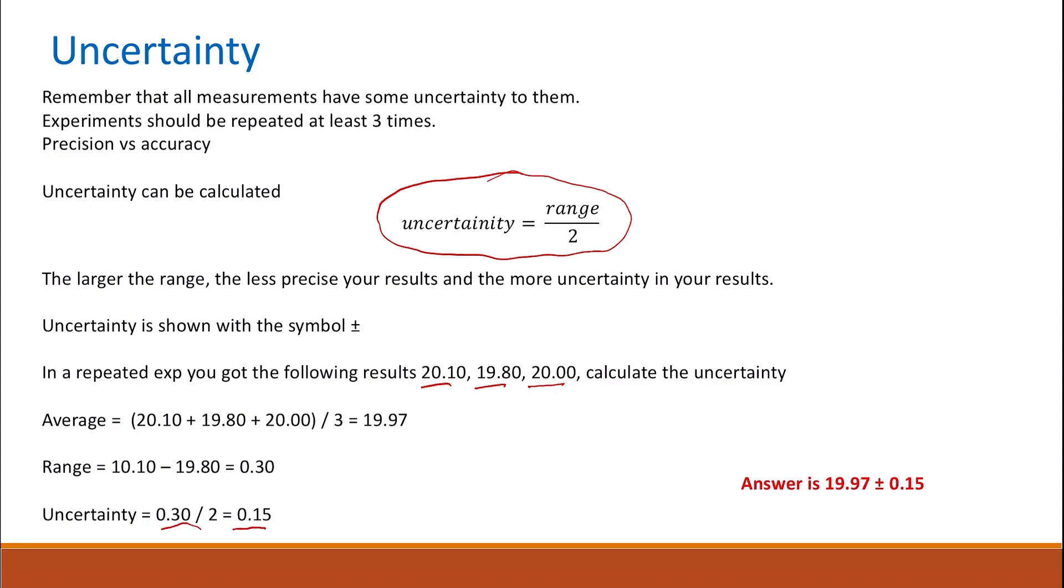To report your results, the results would be 19.97 plus or minus 0.15, which is the uncertainty. When you report your uncertainty, you are saying that the true value, I expect it to be within this range, so either 19.97 plus 0.15 or 19.97 minus 0.15.